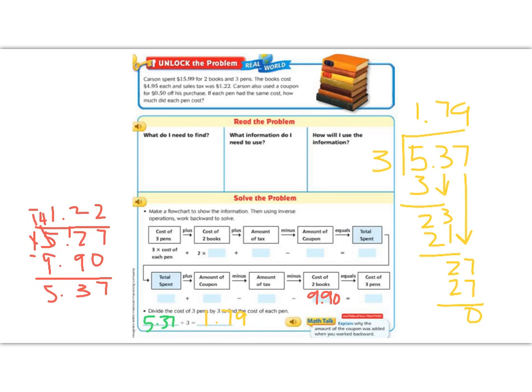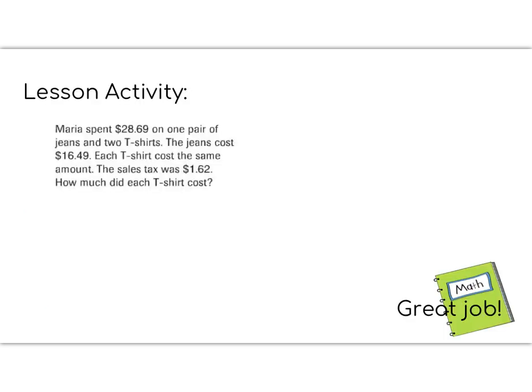Great job 5th graders. All right 5th graders, time for the lesson activity. Today's lesson was a little bit tricky, so I'm going to give you as much help as I can on the lesson activity. It says, Maria spent $28.69 on one pair of jeans and two t-shirts. The jeans cost $16.49. Each t-shirt cost the same amount. The sales tax was $1.62. How much did each t-shirt cost?